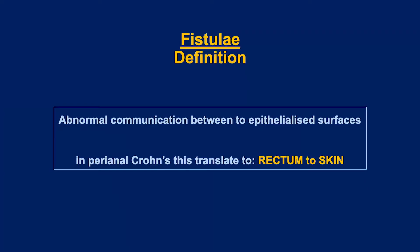The definition of a fistula is an abnormal communication between two epithelialised surfaces, and in the perineum that is really between the rectum and the skin. There are a variety of different classification systems, but in the most basic form it can either be a simple fistula or a complex one.